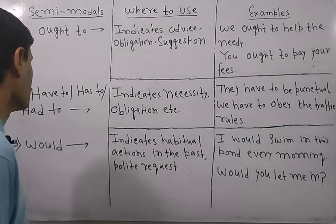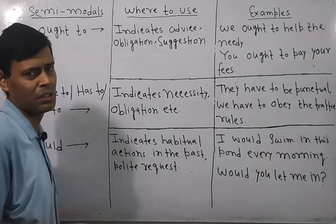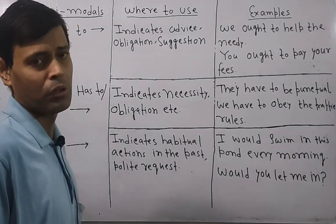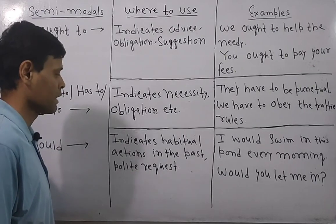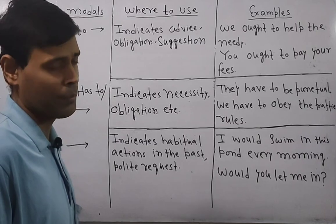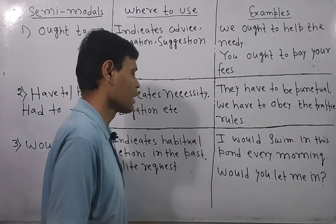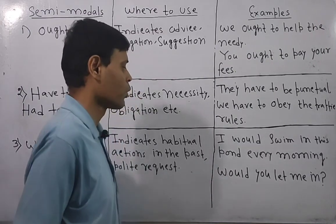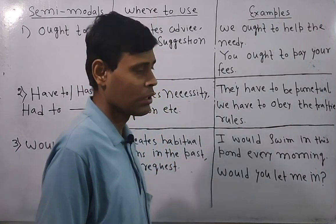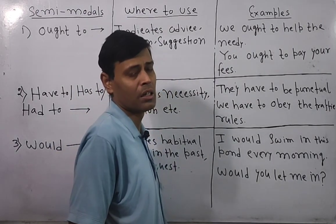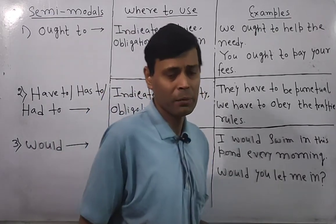The next semi-modal is 'would,' which is generally also called a modal. It indicates habitual action in the past — that means an action that used to happen regularly in the past. For example: 'I would swim in the pond every morning' — this indicates a habitual action in the past, meaning I used to swim regularly in this pond every morning.